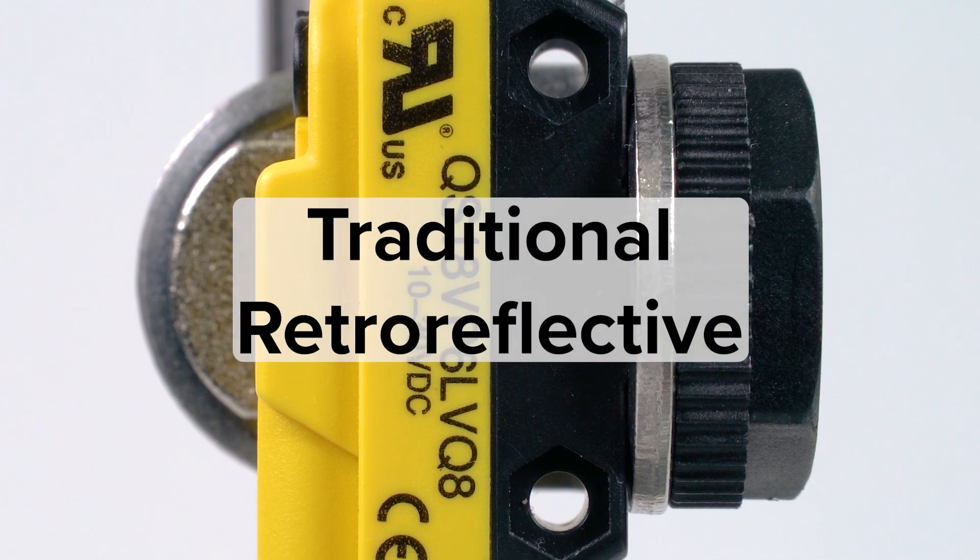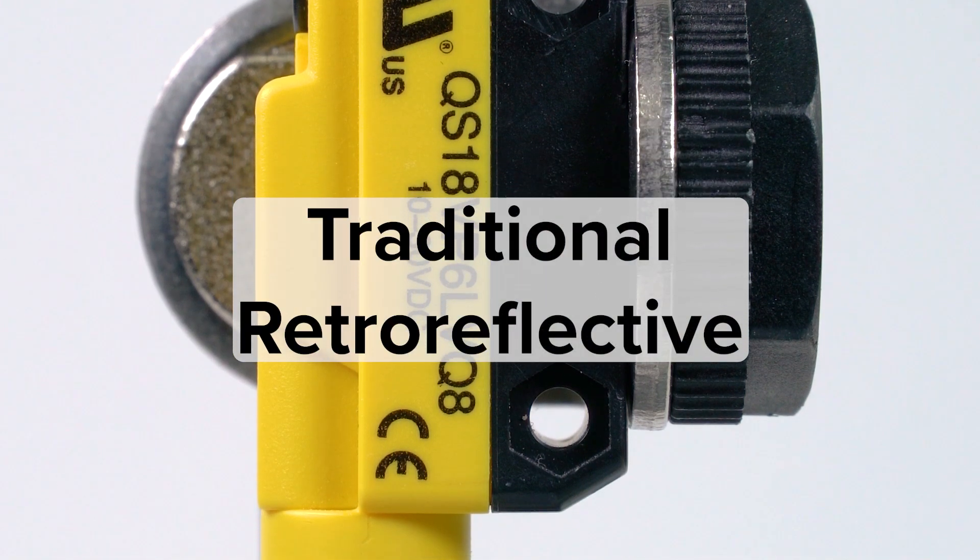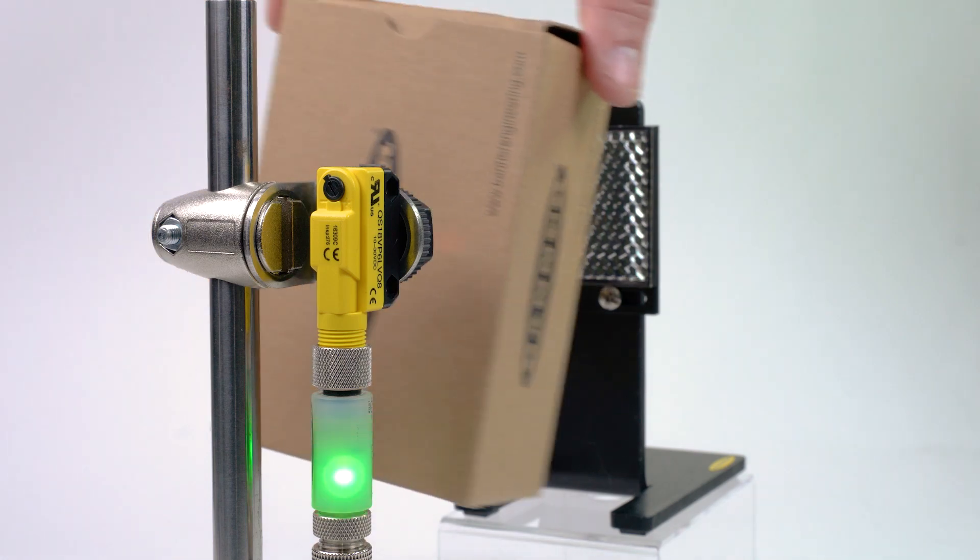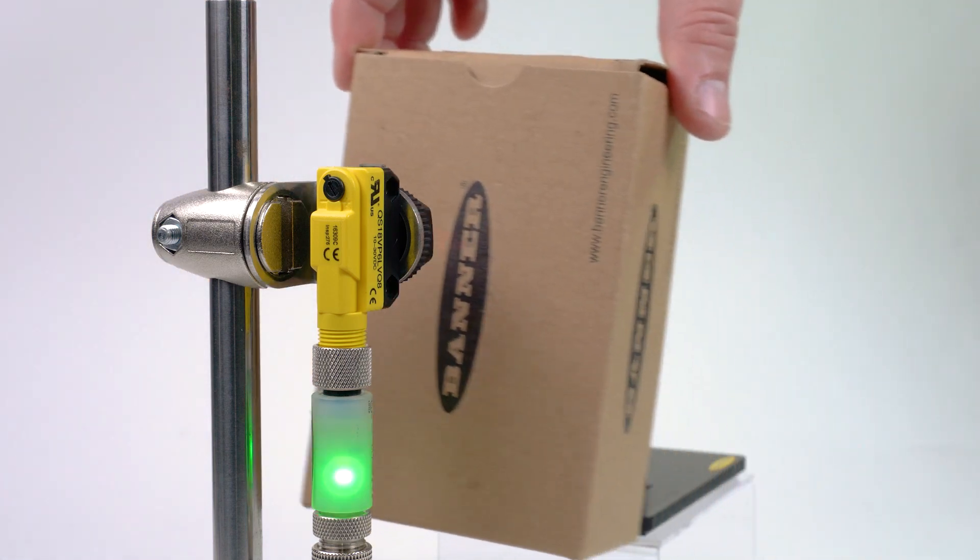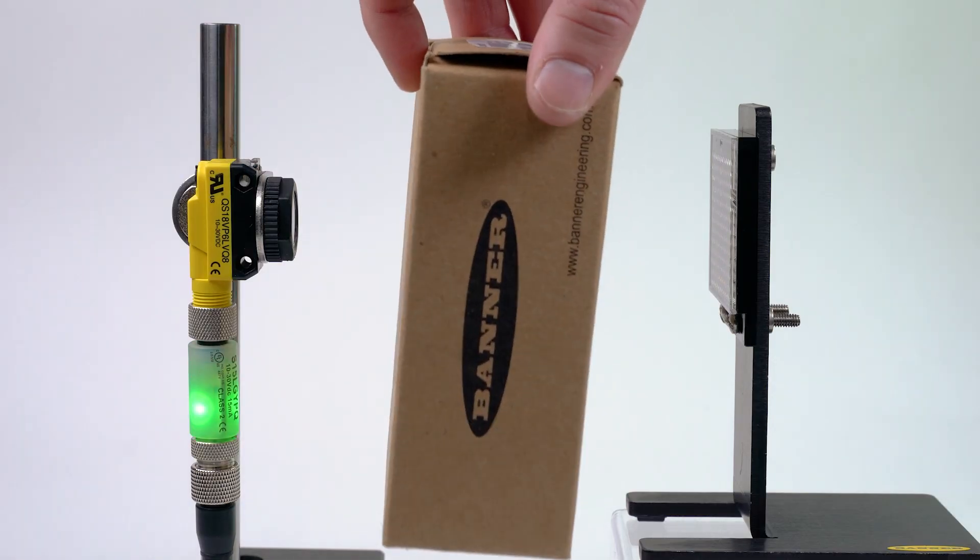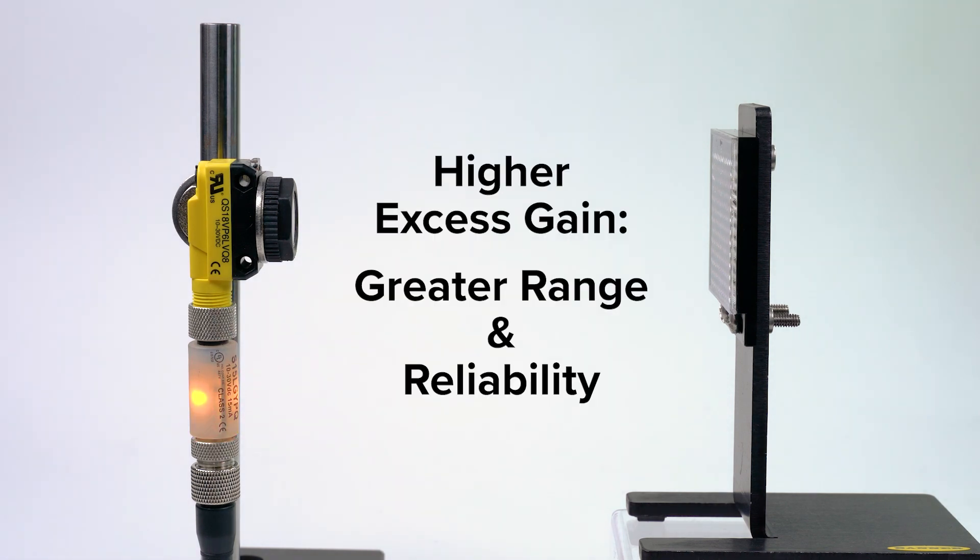A traditional retro reflective sensor is an excellent option for general detection applications of opaque objects without a reflective surface. It also provides the greatest amount of excess gain giving it a greater sensing range and reliability in dirtier environments.